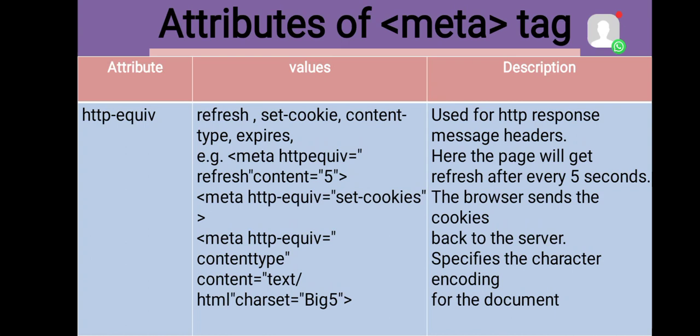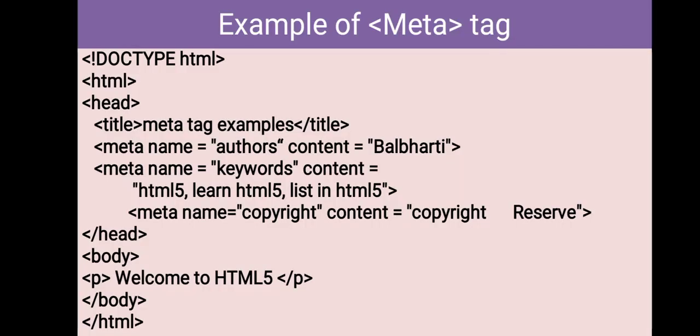So the meta tag has four attributes: the first is name, the second is content, the third is charset, and the fourth is HTTP-EQUIV. Now let us look at an example. We write the HTML5 structure with opening and closing html tags, a title 'meta tag example', then meta name equals author content equals balbharti, meta name equals keyword content equals html5, learn html5, list in html, and meta name equals copyright content equals copyright reserved.